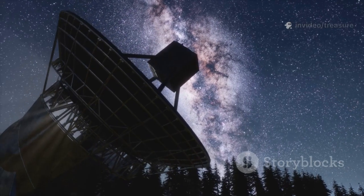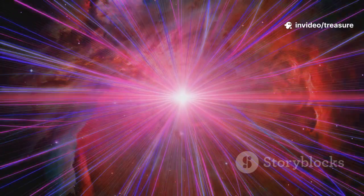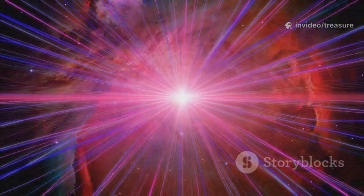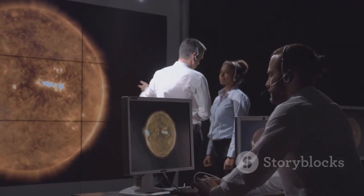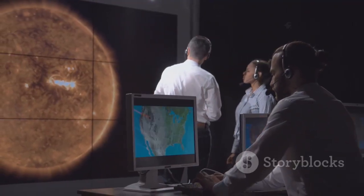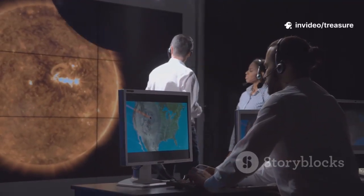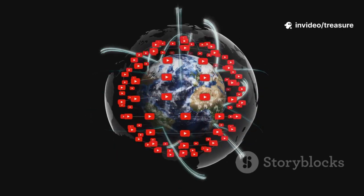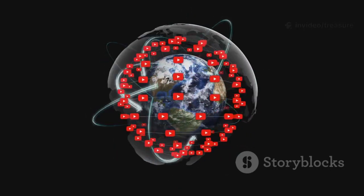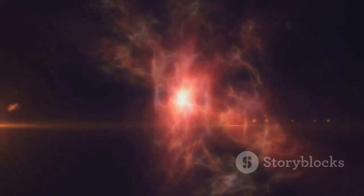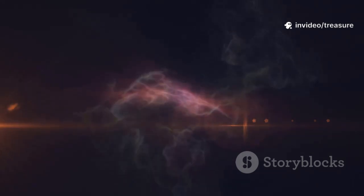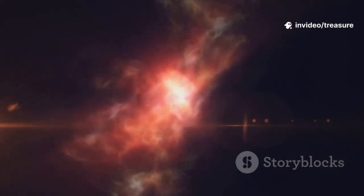But that's not all. The signal from an FRB also carries information about cosmic magnetic fields. As the polarized radio waves travel through space, their orientation gets twisted by any magnetic fields they encounter along the way. By measuring this twisting effect, known as Faraday rotation, scientists can get a sense of the strength and structure of the magnetic fields between galaxies. The signal from FRB 2024-0304b showed that the magnetic fields it traveled through were surprisingly weak. This is another vital clue about the early universe, suggesting that the vast magnetic fields that thread through galaxies today took a long time to grow and strengthen.